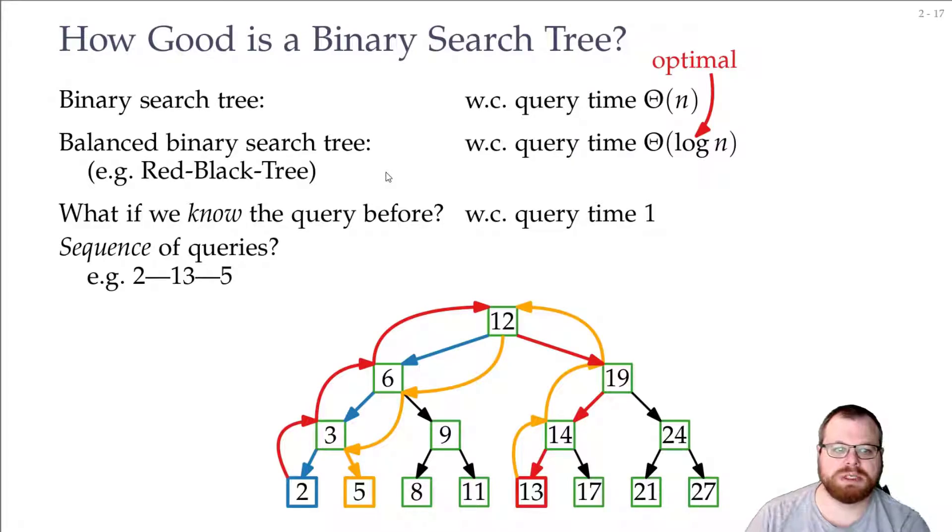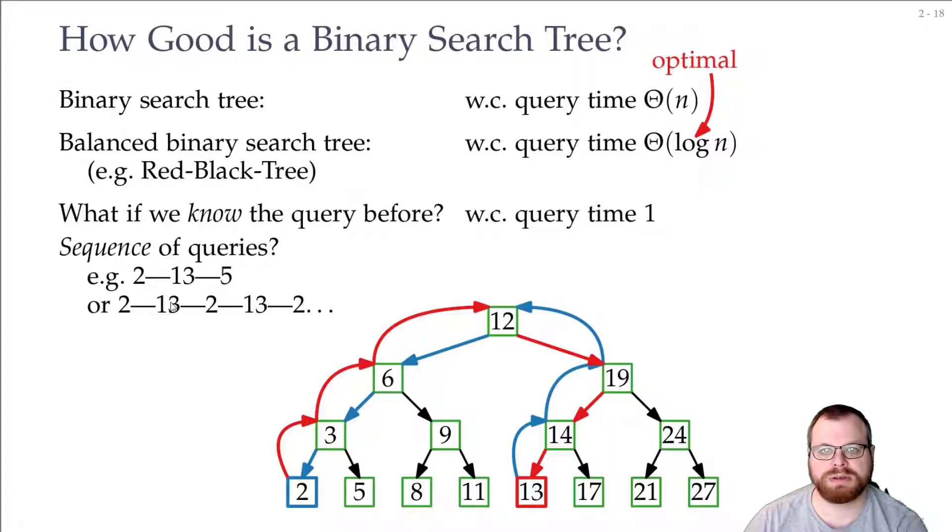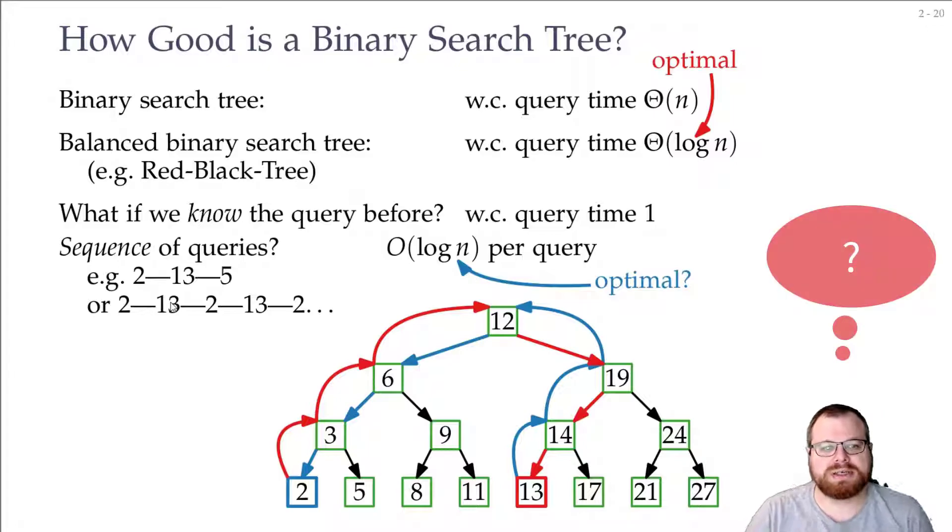And it might also happen that we don't have distinct numbers, but we want to query some numbers several times. So here we have logarithmic time per query, and the question is, is this also optimal?